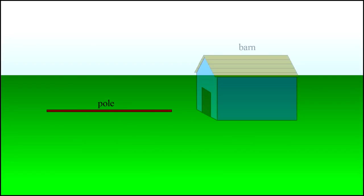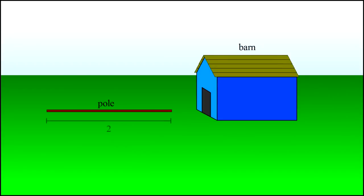Suppose we have a red pole and we have a blue barn. The pole's length is 2 and the barn's length is 1.6. The pole is longer than the barn.